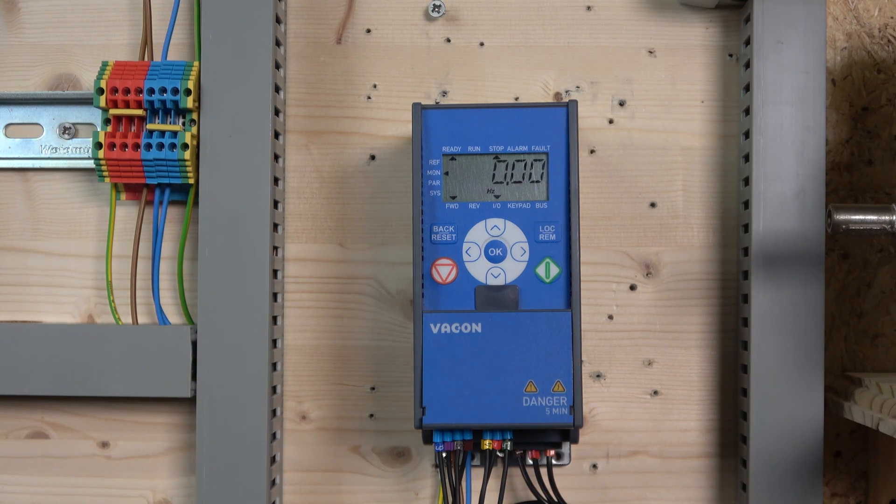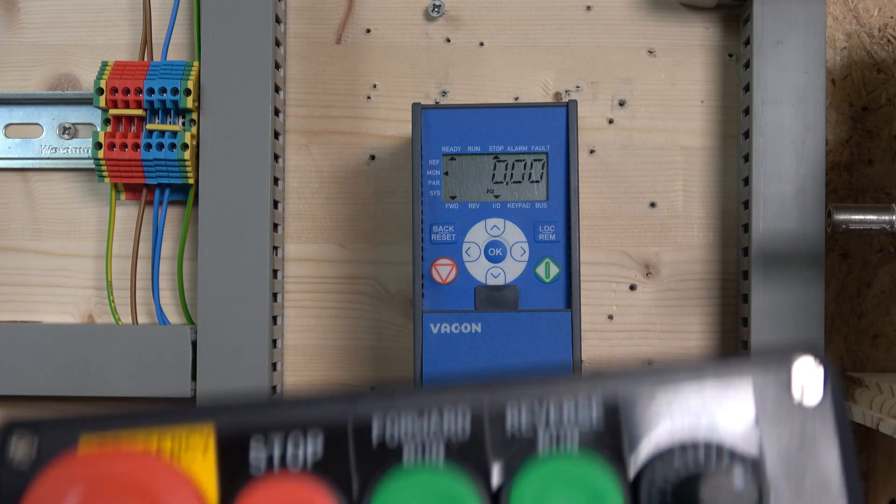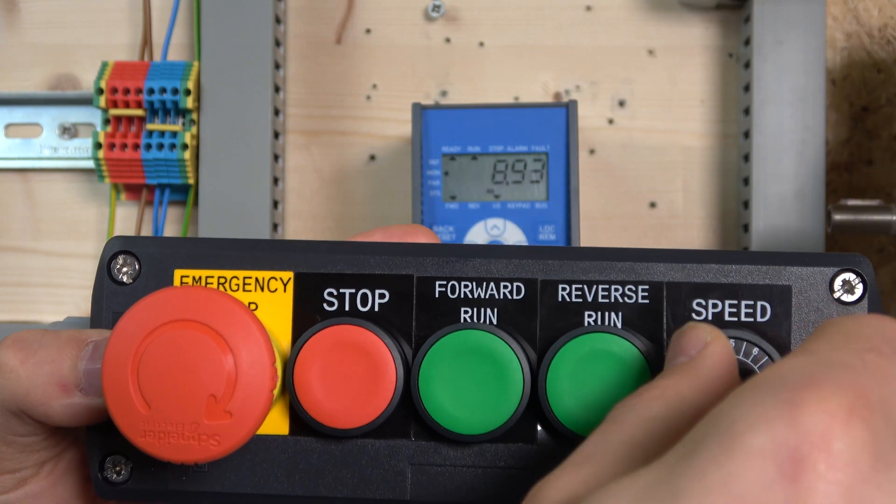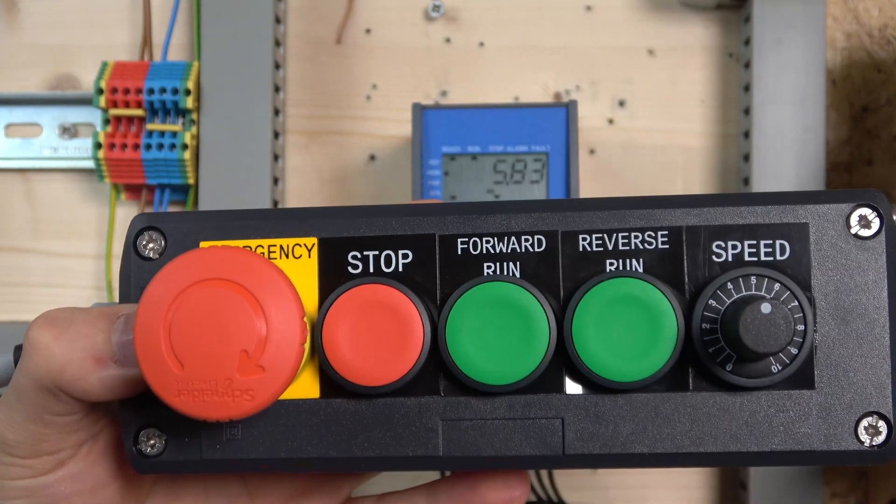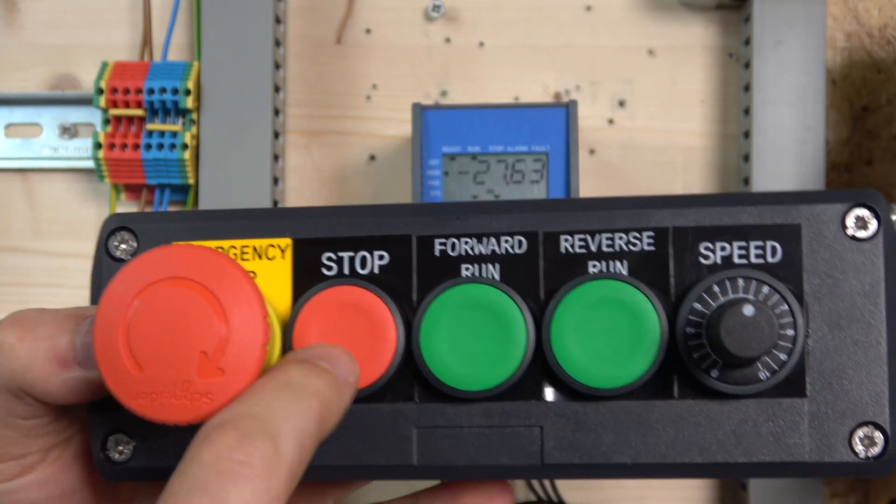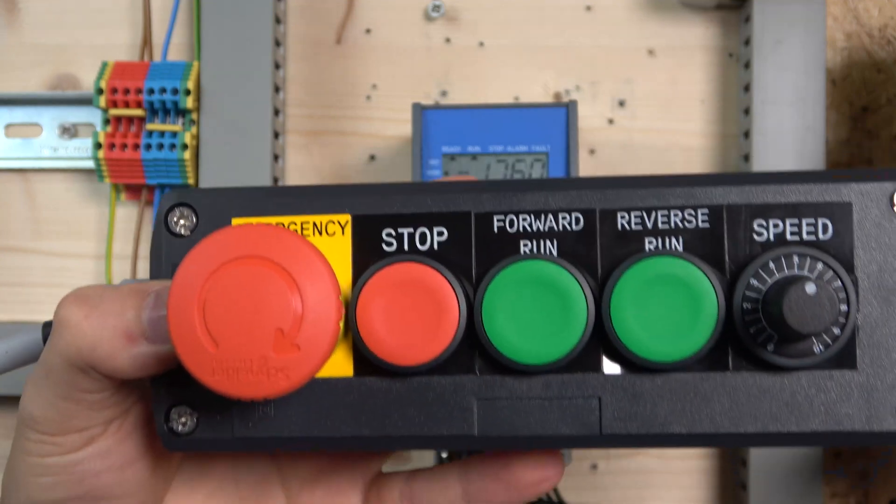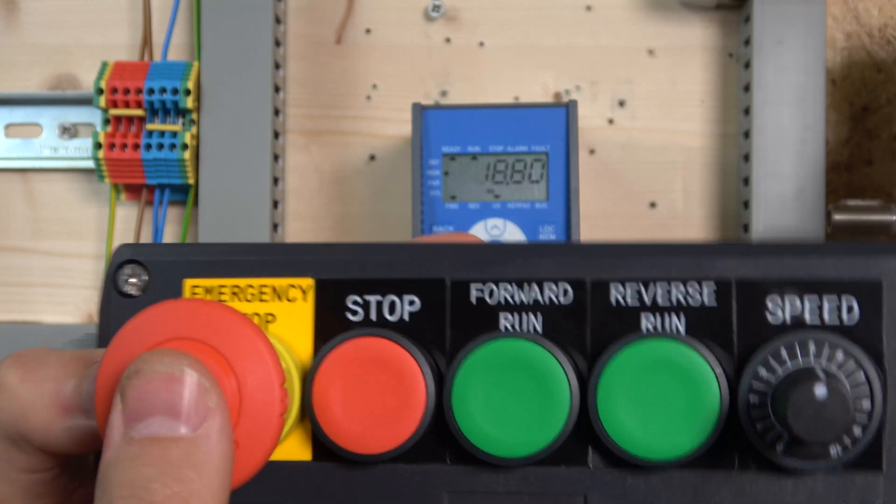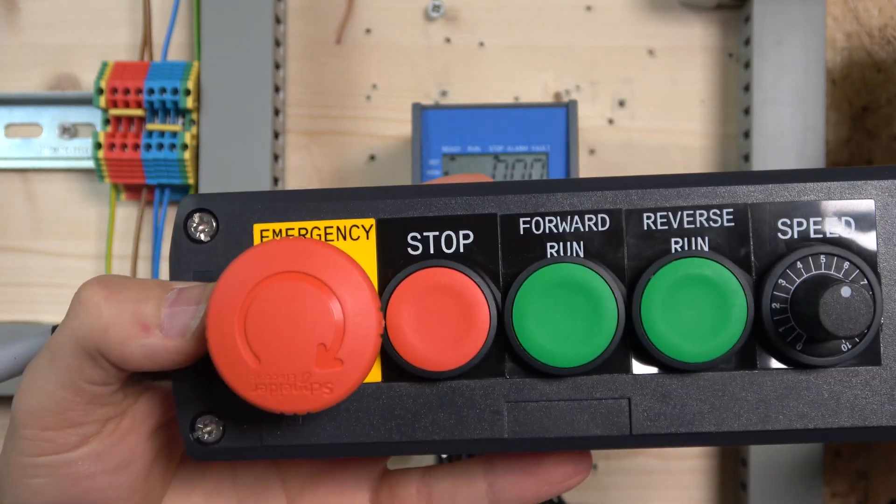Click start. By clicking reverse, it shifts into reverse. Stop it, and you can start reverse again. Clicking stop removes power from the I/Os. That concludes two-wire control and three-wire control.